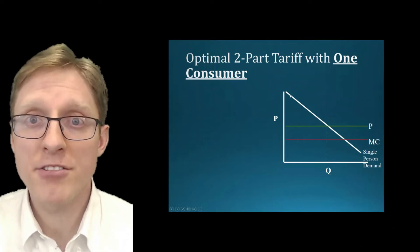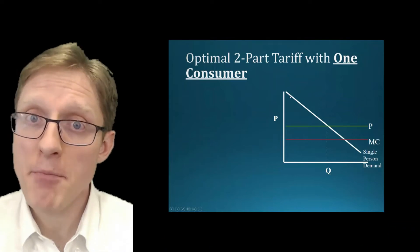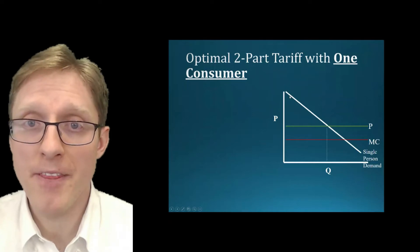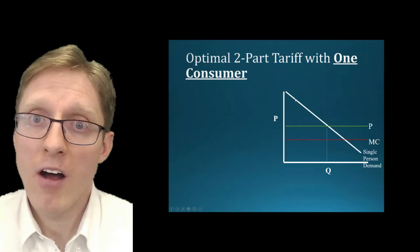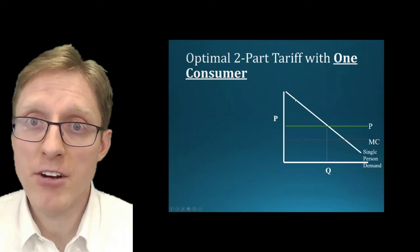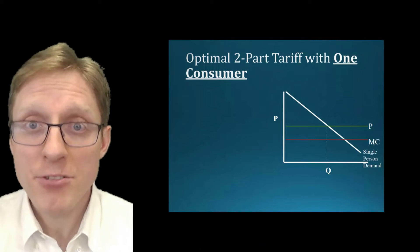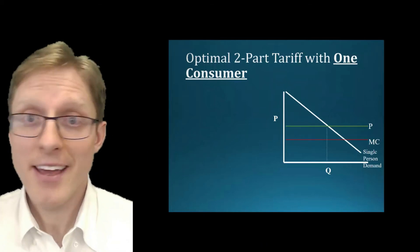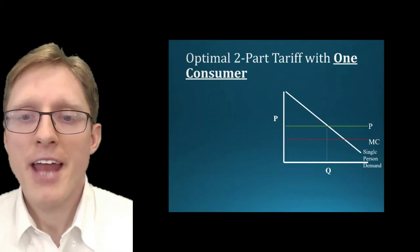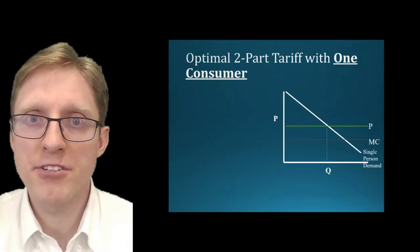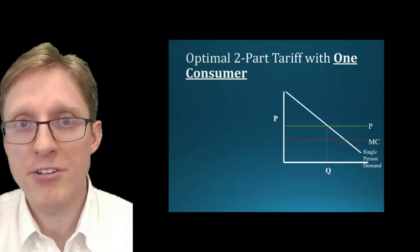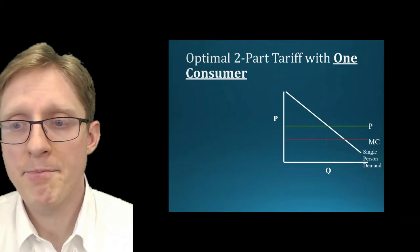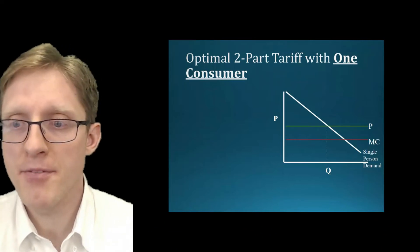The second point tells us how much that same person is willing to pay for the second unit, and the third point along this inverse demand curve tells us how much they're willing to pay for the third unit, and so on. It's downward sloping because we assume there's diminishing marginal utility — or diminishing marginal value — for a given type of item.